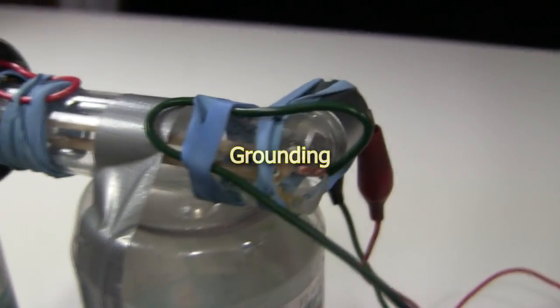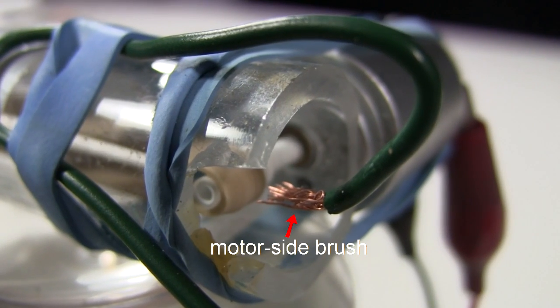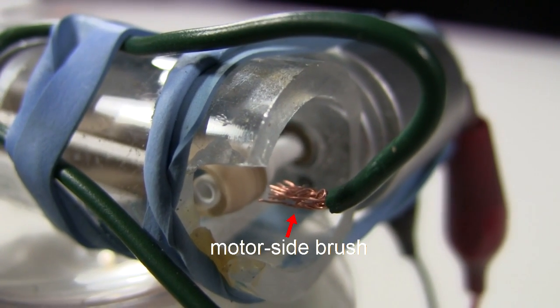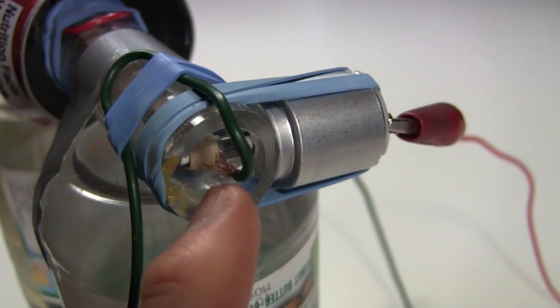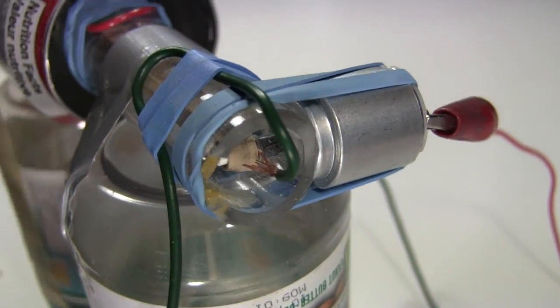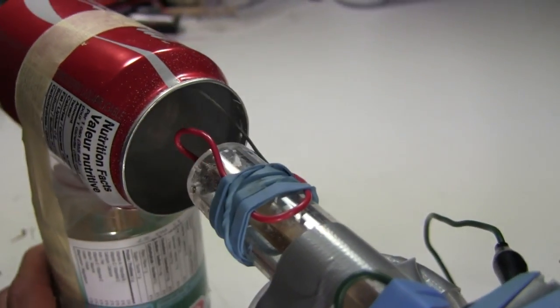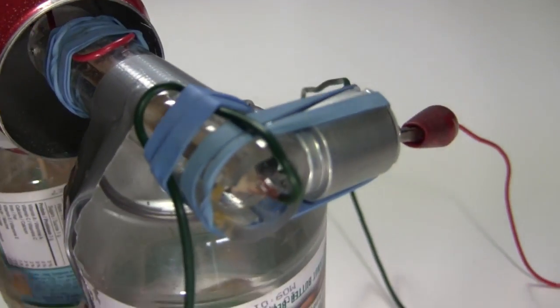Perhaps the thing I get asked most about is the grounding of the brush at the motor side of the Van de Graaff. This needs to be connected to a good charge source or sink. Usually earth ground. Here are some tips for doing that. The brush facing the belt near the motor. I've done the same sort of arrangement as I did over here with the rubber bands.